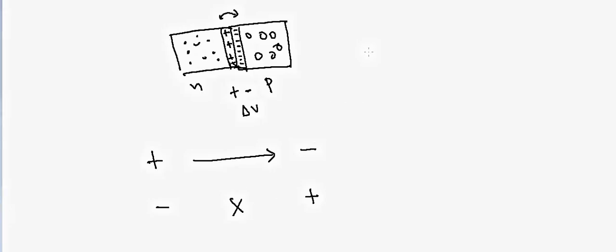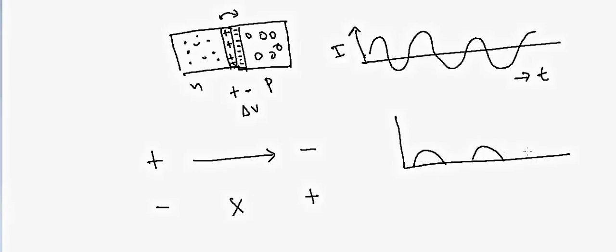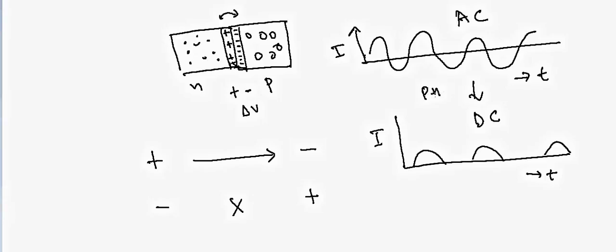Suppose we have an alternating current that flows in both directions. If you pass it through a p-n junction, we lose any current in the opposite direction and only retain current in one direction. That is how you can convert alternating current to direct current using a p-n junction. We will discuss this concept more in further tutorials. I hope you learned something today — see you in the next tutorial. Thank you.